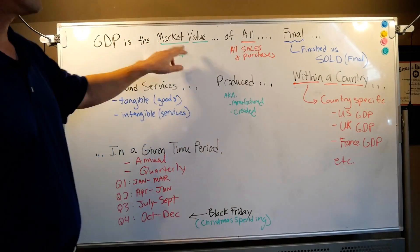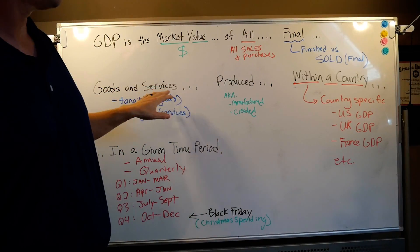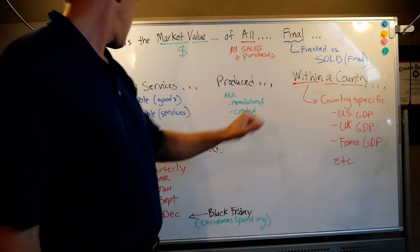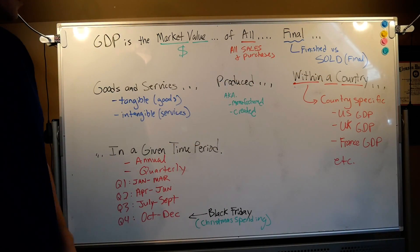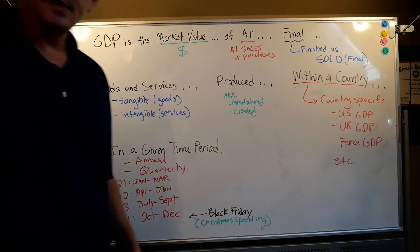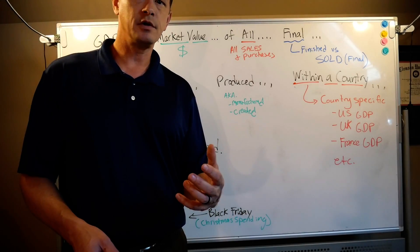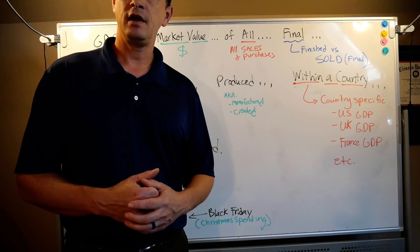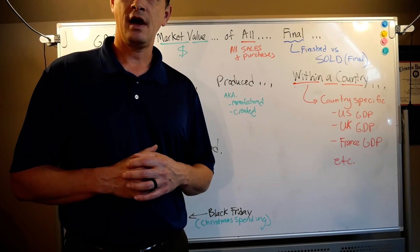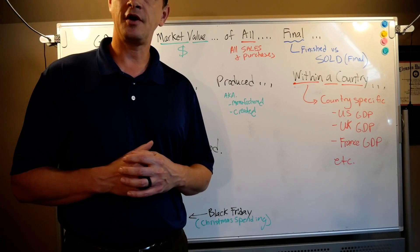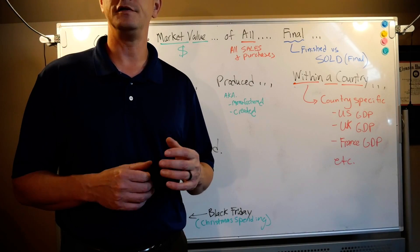To recap: GDP is the market value of all final goods and services produced within a country in a given time period. A simple definition that I could have just read out of the book in 30 seconds — but that's the whole point of this lecture. I hope you've enjoyed it. Come back and we will talk about the different components of GDP.